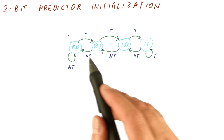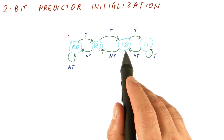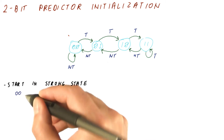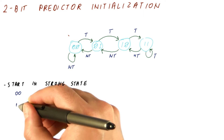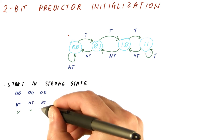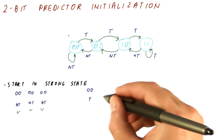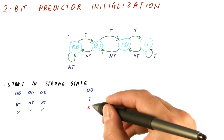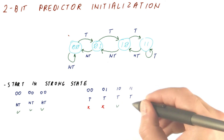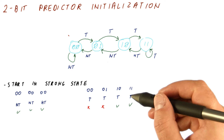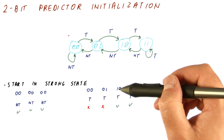For a two-bit predictor, the question is really should we start in one of the strong conviction states, or should we start in one of the weak prediction states? If we start in a strong state, for example zero-zero, and the actual decisions are not taken, then we will stay in that same strong state and never have any mispredictions. However, if we start in the strong state zero-zero but the branch tends to be taken, we will mispredict once, move to the zero-one weak not taken state, mispredict again, and then start predicting correctly. So if we start in a strong state and it's the correct strong state, we have no mispredictions. If it's the wrong strong state, we have two mispredictions.